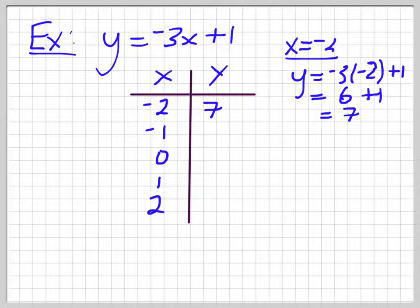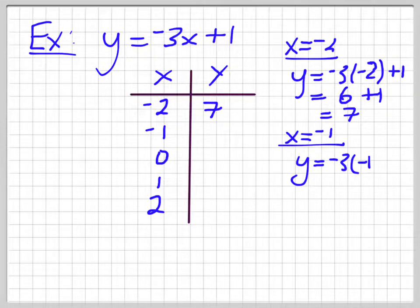And then I can just repeat that for the next one. Let me try negative 1. x is equal to negative 1. y is equal to negative 3 times negative 1 plus 1. So that's 3 plus 1 is 4.